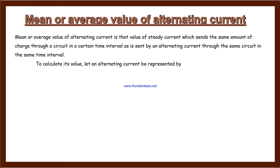The definition of the mean or average value of alternating current is that value of steady current which sends the same amount of charge through a circuit in a certain time interval as is sent by the alternating current through the same circuit in the same time interval.